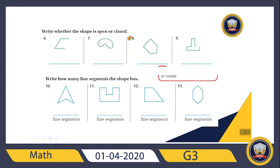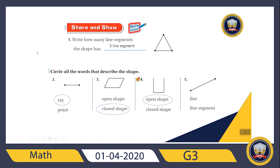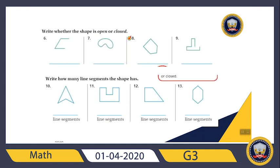Here we just have to write whether the shape is open or closed. This shape has three sides but one side is empty, so it is an open shape. What about this shape, which is curved and something like an oval? It's a closed shape.